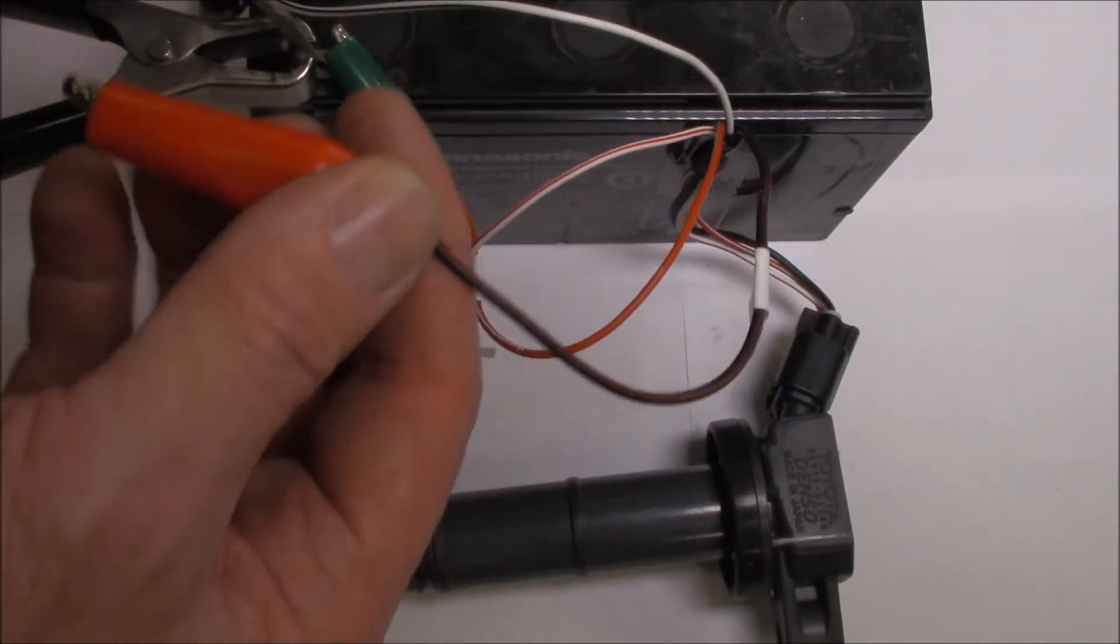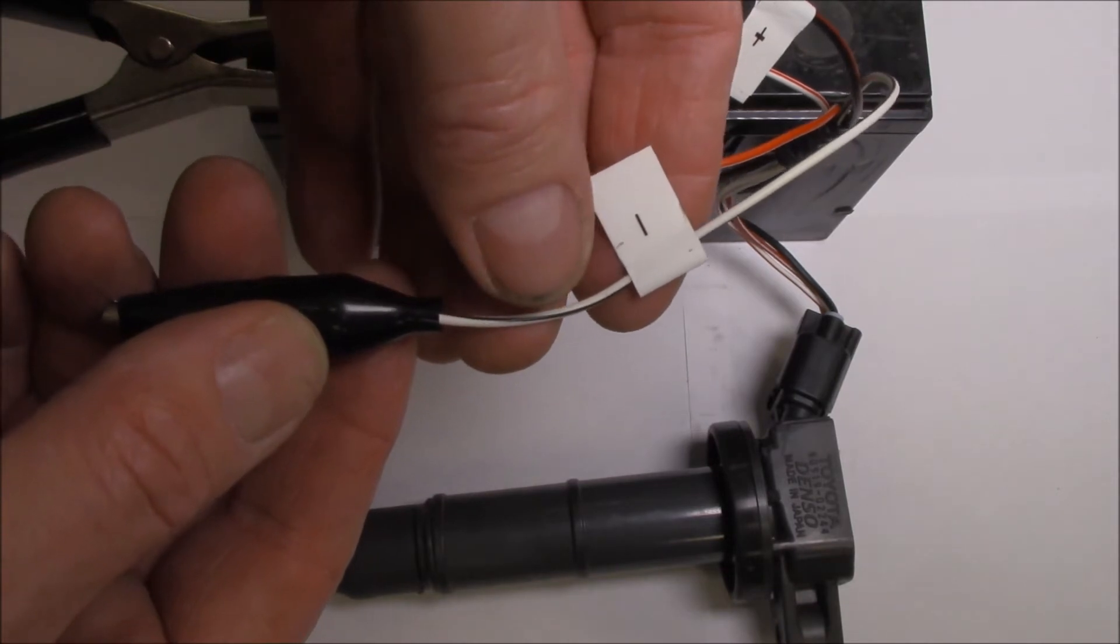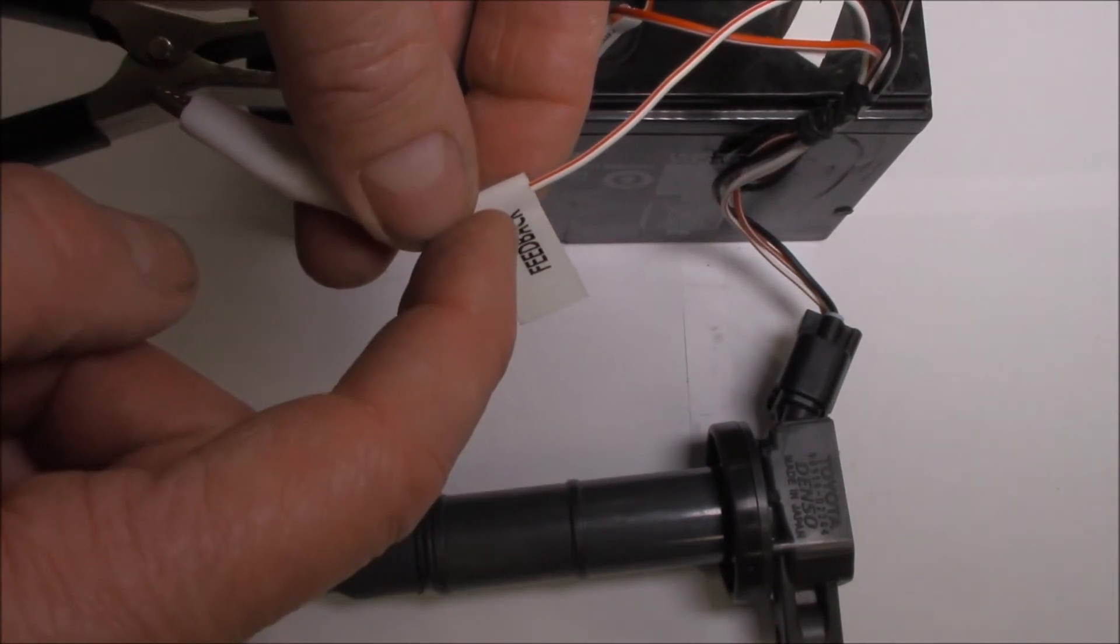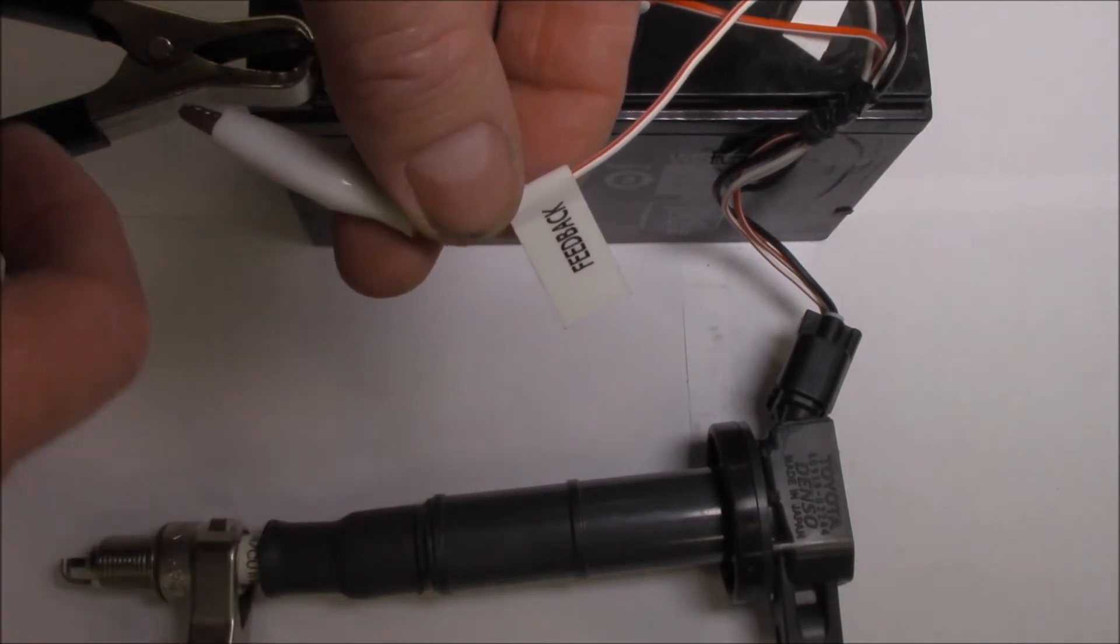My black-red one is positive. My white-black one is negative. This white-red one is actually a feedback circuit which goes back to the ECU. We don't need to worry about that at this point in time.